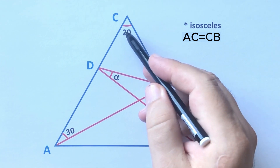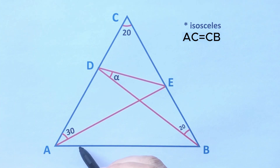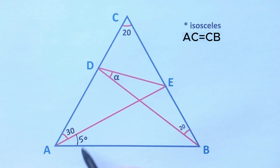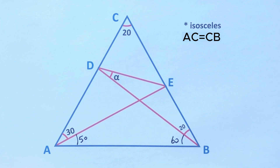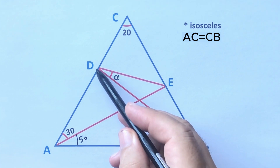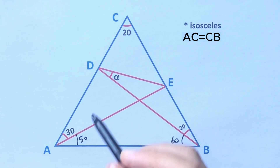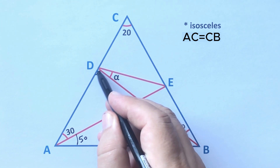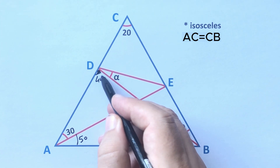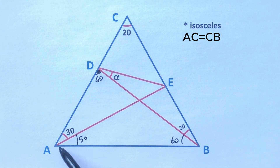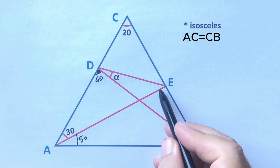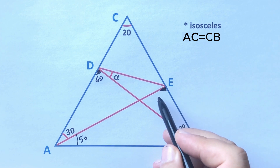First, if the apex is 20 degrees, we know that the base angles must be 80 degrees. So 50 degrees are left here and 60 degrees left here. We know that the sum of interior angles equals 180 degrees, which means here is 40 degrees, and for this triangle 50 degrees are left here.